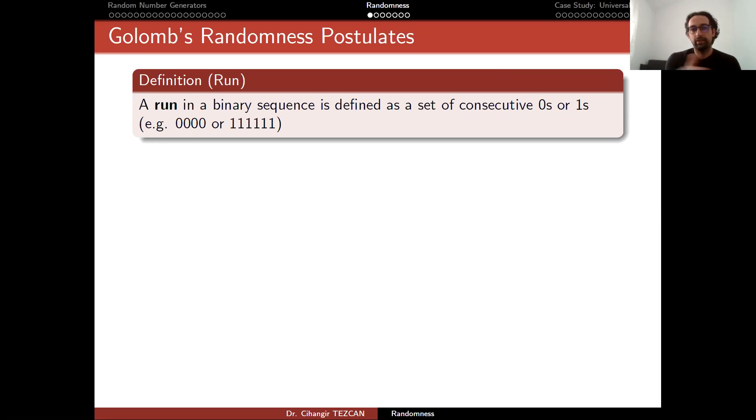A run in a binary sequence is defined as a set of consecutive zeros or ones. For example, here you can see four zeros. This is a single run and you have six ones here. It is also a run of length six.